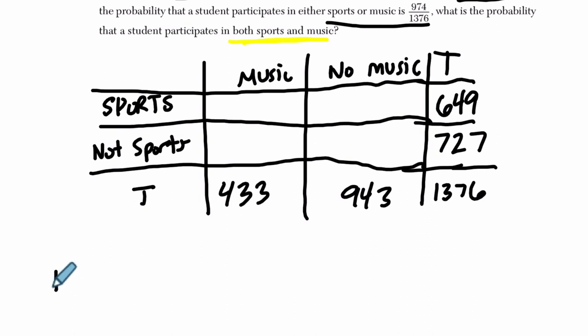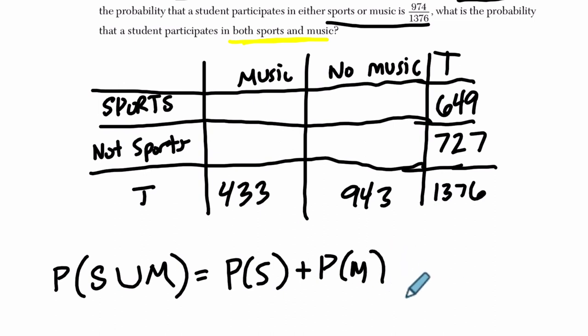And I write down a definition of the union of events. So let's say we have the probability of playing sports or, this is a symbol for or, or union, music. It looks like the word is some, but it's saying sports or music. They're telling us that that number is 974 over 1376. But what is the definition of the union?